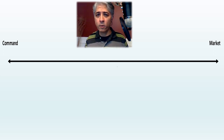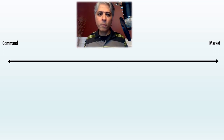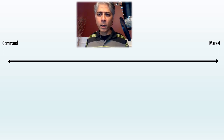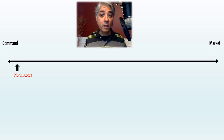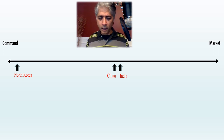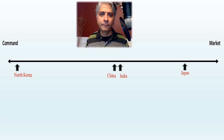Let's look at the economic continuum line. On the far left is a pure command economy, and on the far right is a pure market economy — no country belongs all the way at one end or the other. Going from left to right: North Korea has the least economic freedom at around 5%. Next is China, just past the middle at about 52%. Then comes India at 54% according to the reading, probably closer to 60% today. And Japan is over here at around 73%.